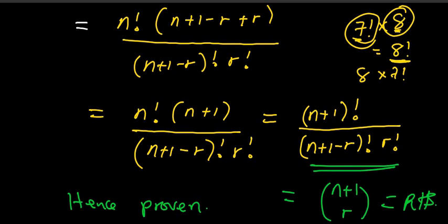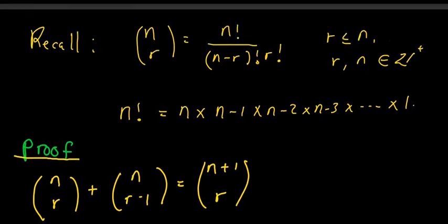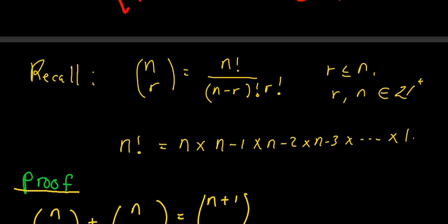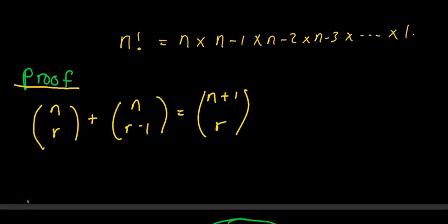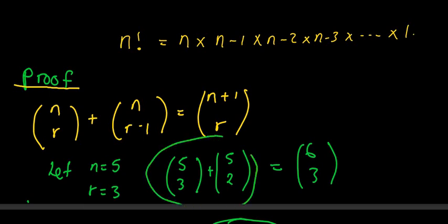As a quick illustration, let n equal 5 and r equal 3. Then 5 choose 3 plus 5 choose 2 should give the same answer as 6 choose 3. This is basically what this identity tries to justify — when you solve both sides you get the same answer.